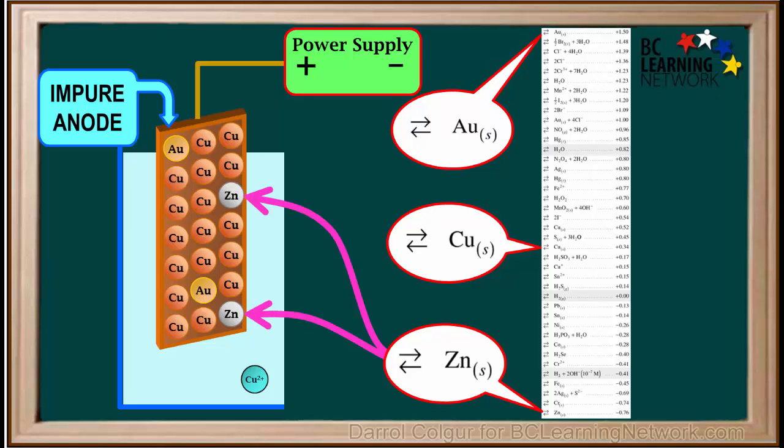The zinc atoms we added can represent any metals that are below copper on the right side of the reduction table. These include metals like lead, tin, nickel, cobalt, iron, and chromium. Even metals below zinc that are not shown on this diagram, such as aluminum or manganese. Anything we say about zinc in this video applies equally to all metals below copper on the right side of the table.